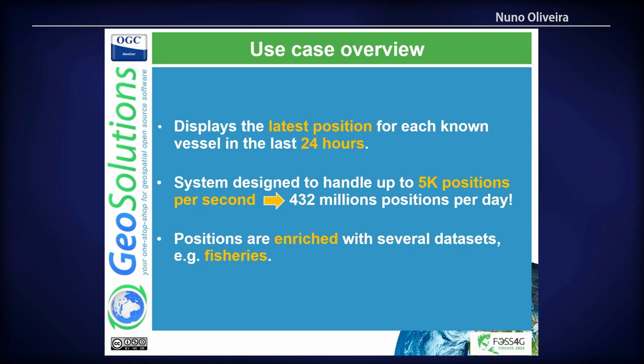The first use case is visualizing the latest position for a vessel in the last 24 hours. Every time a vessel reports its position we update the system, so whenever someone makes a WFS or WMS request they see the current authorized position. In practical terms, we store multiple positions per vessel matching the cardinality of the authorization rights — just that optimization could be a presentation on its own. This system is deployed in Azure, designed to receive 5,000 positions per second — around 432 million per day — enriched with several datasets, most significantly the fisheries dataset.